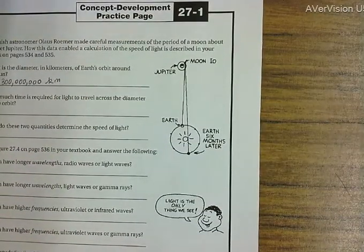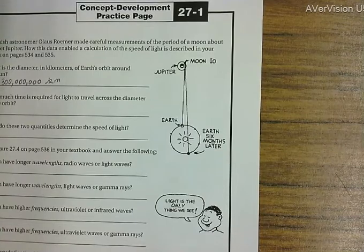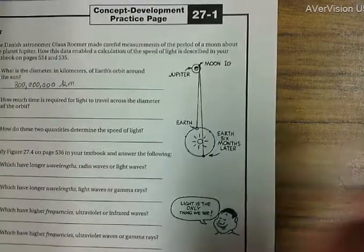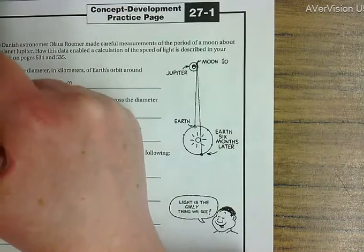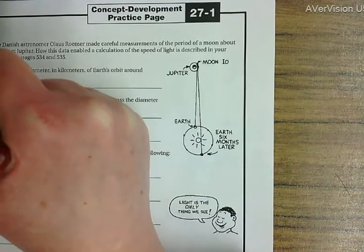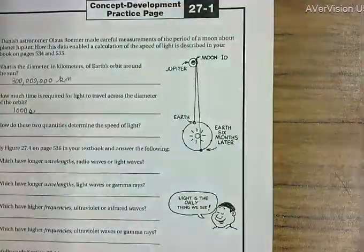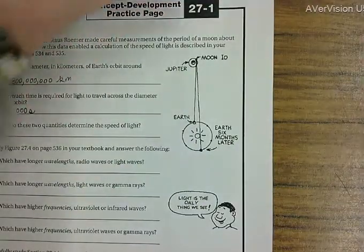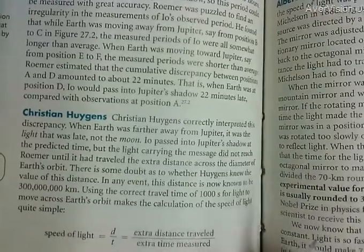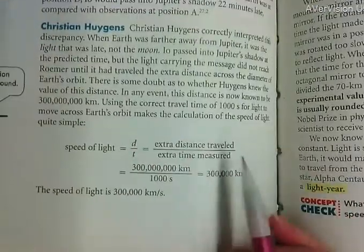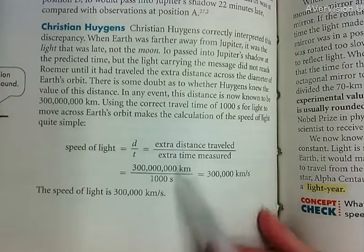How much time is required for light to travel across the diameter of the orbit? When you read that, Romer discovered that there was a 1,000 second delay. So we're looking at the extra distance and the extra time, which was 1,000 seconds.